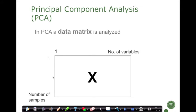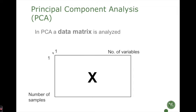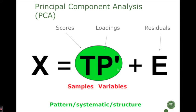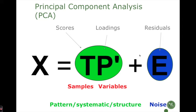So what does principal component analysis do? It takes in a set of variables organized as a data matrix X, with samples in rows and variables in columns. We assume the data are pre-treated, meaning centered and/or scaled. PCA then decomposes X into scores T and loadings P, which describe the systematic variation of the data, plus a residual matrix E for the variance not captured by the model. The TP part reflects systematic structure and patterns; the residual E reflects uncorrelated noise.